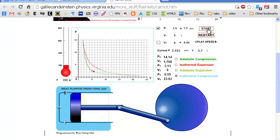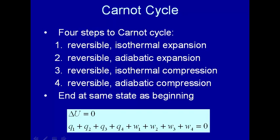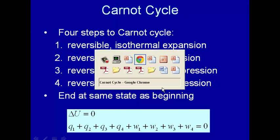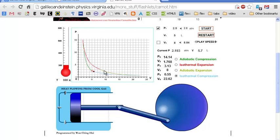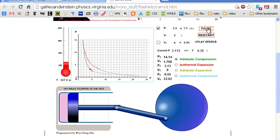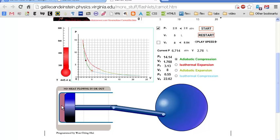And then finally, the fourth step is a reversible adiabatic compression. On this fourth step, what's happening is that we're changing this low temperature reservoir to an insulator. So now we have an insulator, and now we compress the gas here adiabatically.